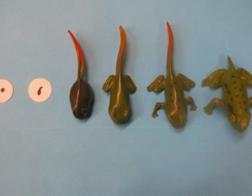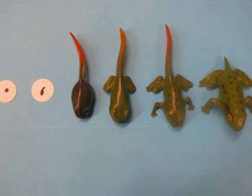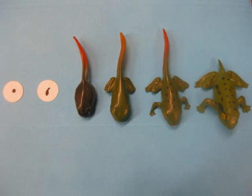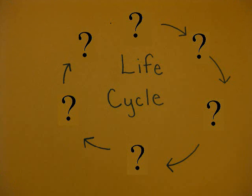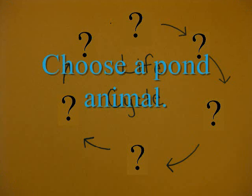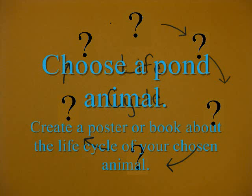Those are the six stages of the life cycle of a frog. Now it's your turn! You will choose a pond animal that we have been talking about in class and do research to create a poster or book about the life cycle of your chosen animal. Good luck and have fun!